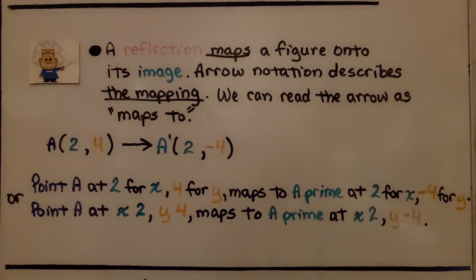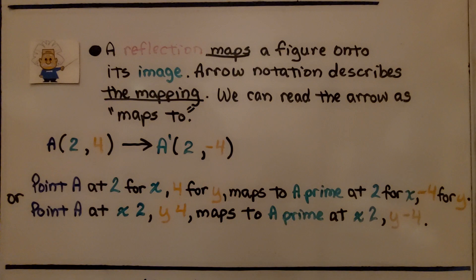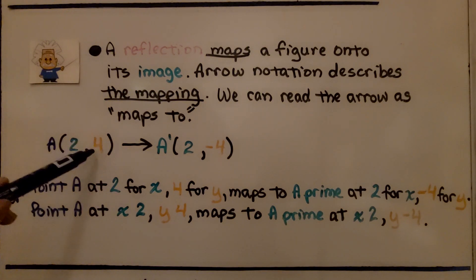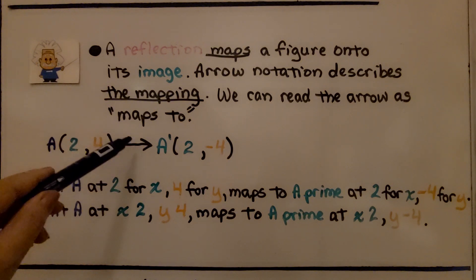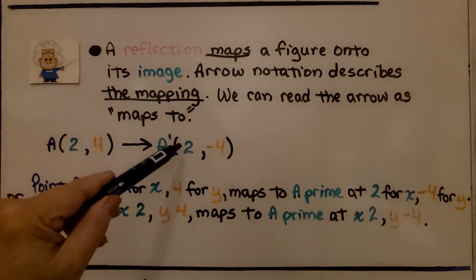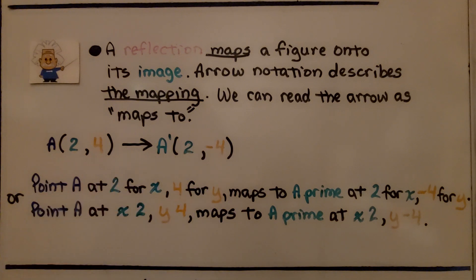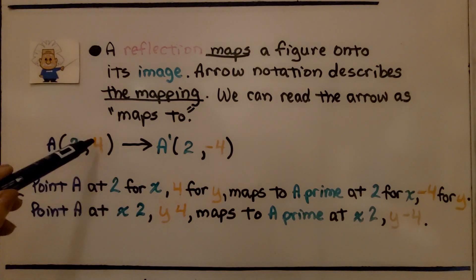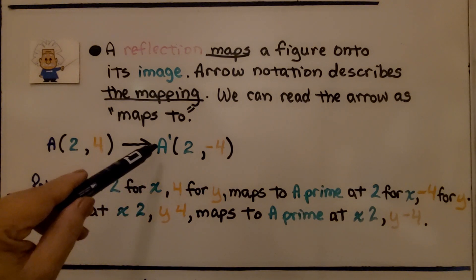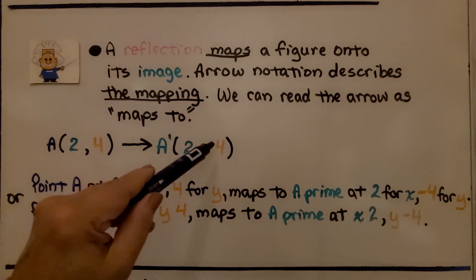A reflection maps a figure onto its image. Arrow notation describes the mapping — we can read the arrow as 'maps to,' so A maps to A prime. We could read this as point A at 2, 4 maps to A prime at 2, negative 4. We can also read it as point A at x, y maps to A prime at x, negative y.